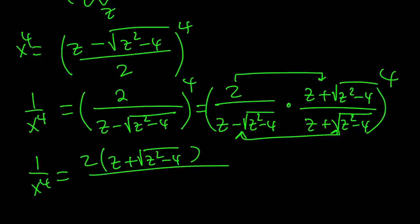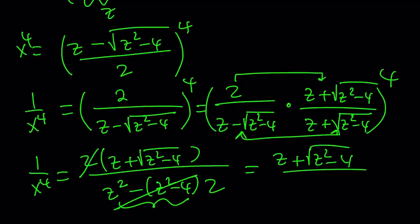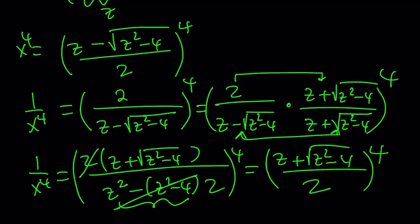At the bottom, from difference of two squares we get z squared minus the square root of z squared minus 4 squared, which is z squared minus 4. This simplifies to 4. So 2 goes into 4 two times, and we end up with z plus the square root of z squared minus 4 over 2 as the answer for 1 over x to the fourth. Now we raise the whole thing to the fourth power.